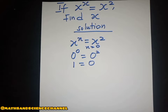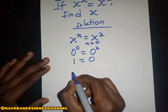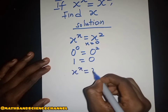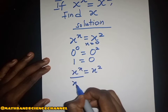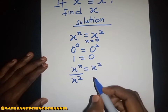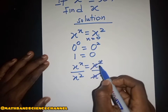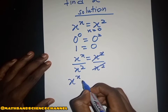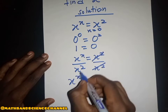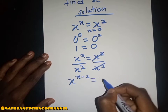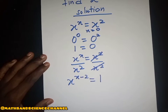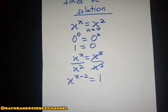So what we can do is divide both sides by x squared. We have x to the power x being equal to x squared. When we divide both sides by x squared, we get x to the power x minus two being equal to one.